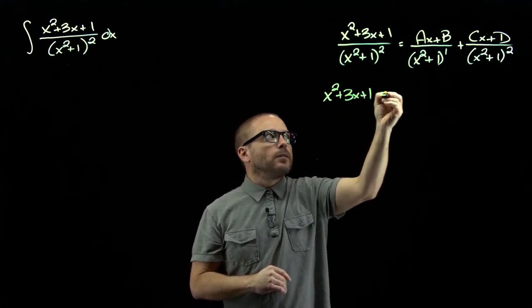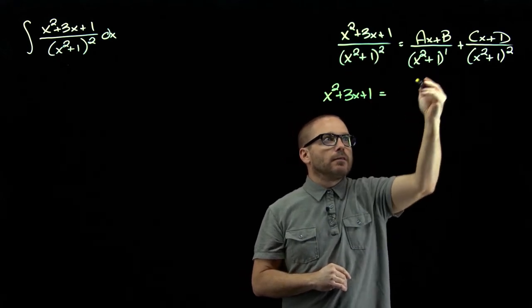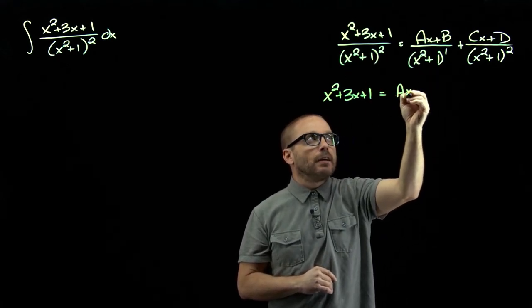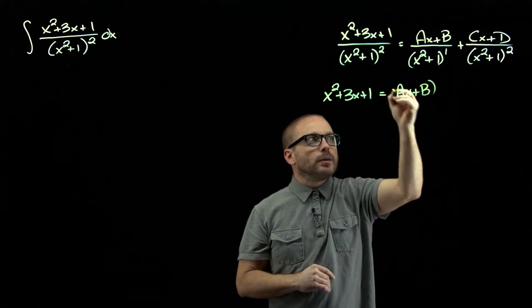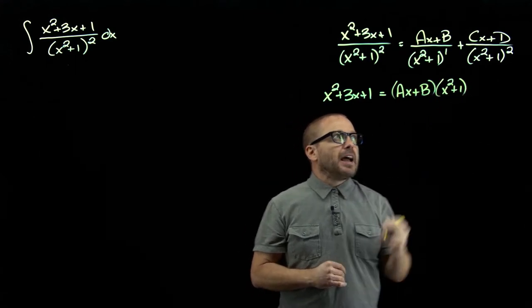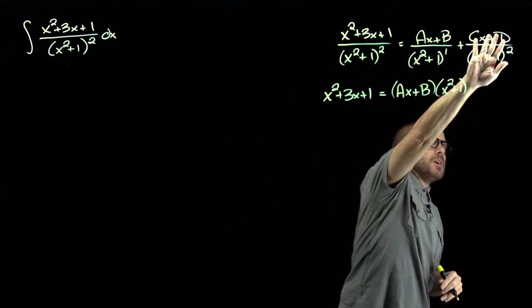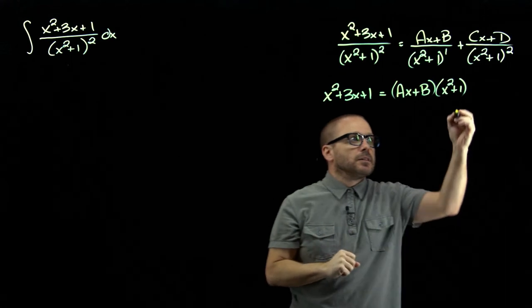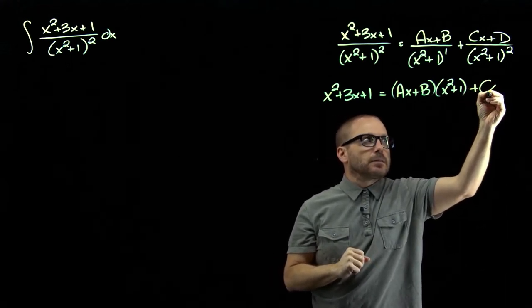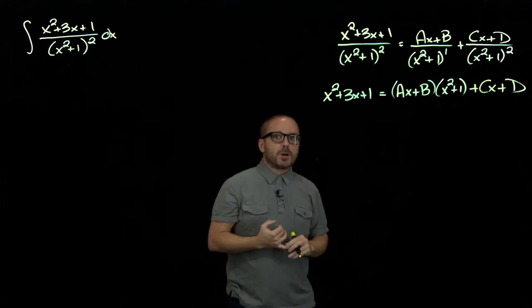And when we multiply this first expression by that denominator, one of them will cancel, but we'll still have one. So we'll have our ax plus b times x squared plus one. And then when we multiply this denominator by that one, it completely cancels. So then we just have the cx plus d.